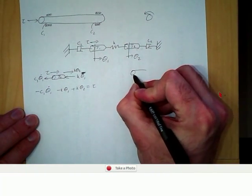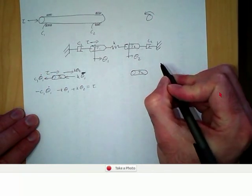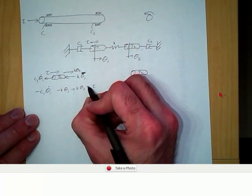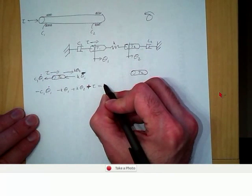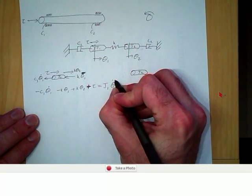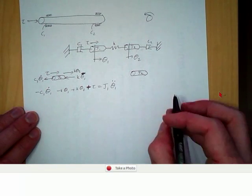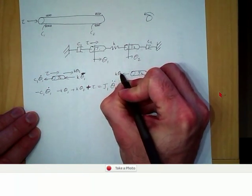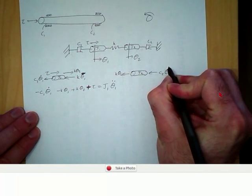For the free body diagram at the second motion, we have J2. The forces acting are K theta 2, C2 theta 2 dot, and K theta 1. That gives us the equation: K theta 1 minus K theta 2 minus C2 theta 2 dot equals J2 theta 2 double dot.